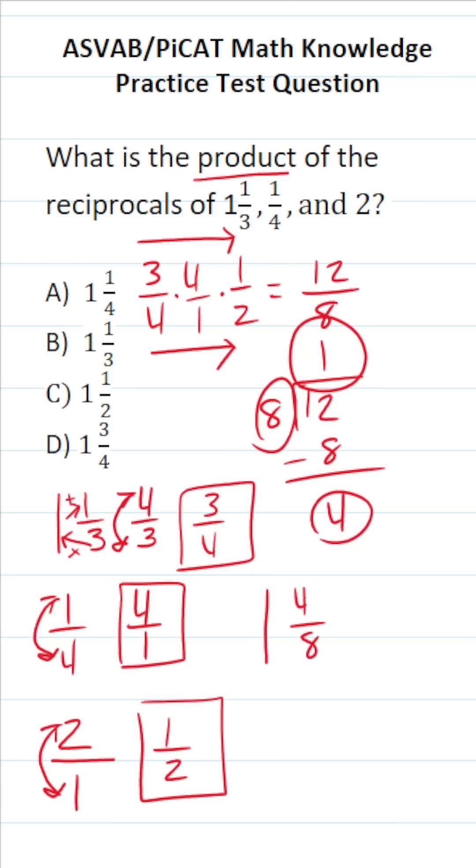Of course, this isn't an answer choice because we could reduce 4 and 8 by a common factor of 4. 4 divided by 4 is 1. 8 divided by 4 is 2. So the product of the reciprocals of 1 and 1/3, 1/4, and 2 is clearly C, 1 and 1/2.